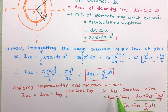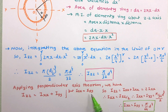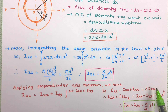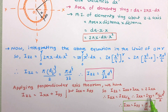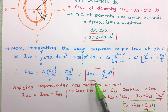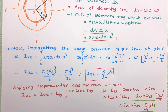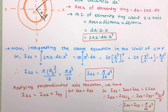Since Ixx and Iyy are equal, Izz = Ixx + Ixx = 2·Ixx, so Ixx = Izz/2. Substituting Izz = πd⁴/32, the value of Ixx and Iyy is finally obtained as πd⁴/64. The moments of inertia Ixx, Iyy, and Izz will be very useful when solving problems.